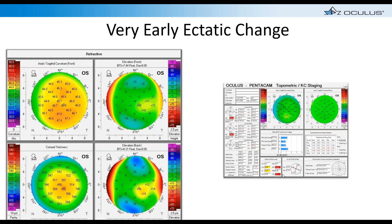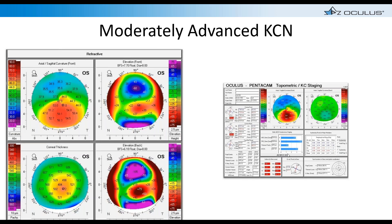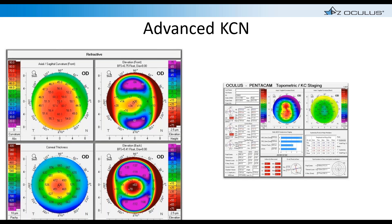For early ectatic changes, we can use the topometric KC staging to determine what stage keratoconus has reached. It uses an ABCD notation: A is the anterior radius of curvature, B the posterior radius of curvature, C the corneal thickness at the thinnest point, and D is the best-corrected vision loss, which must be entered manually. We can grade patients on this ABCD scale and monitor how things change over time.